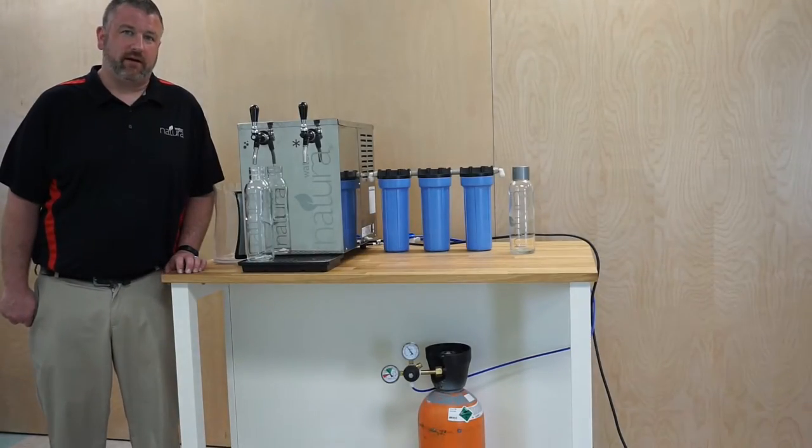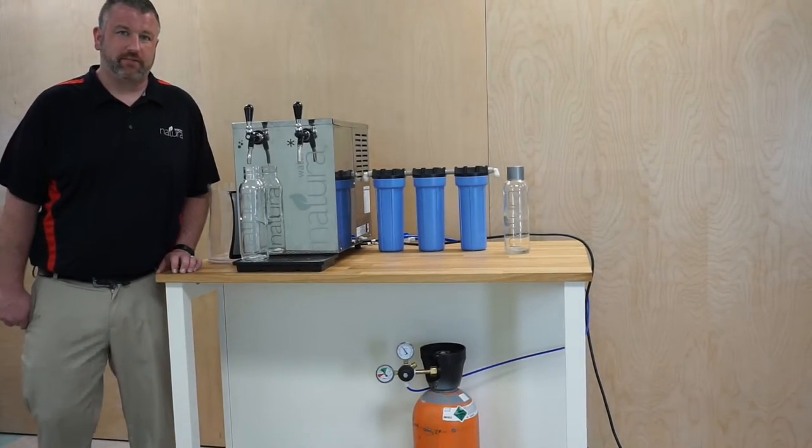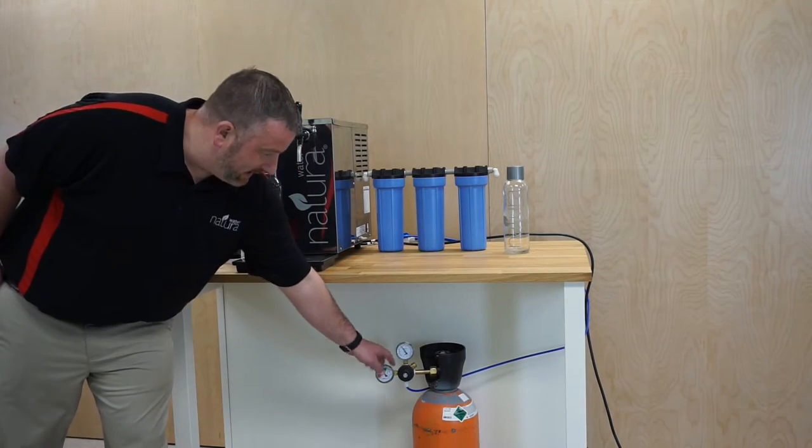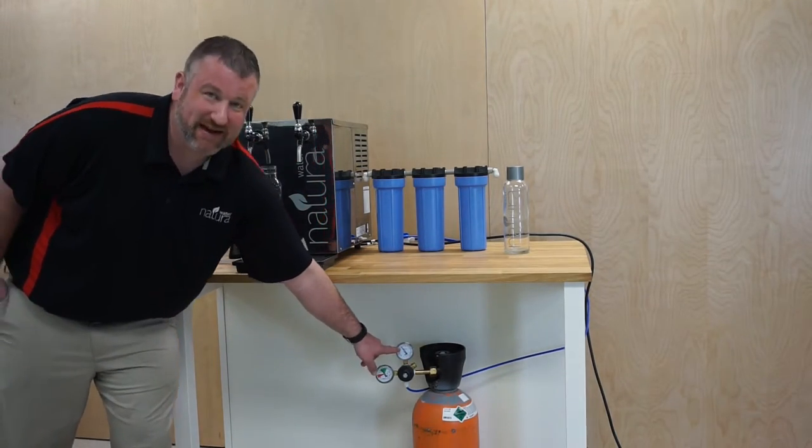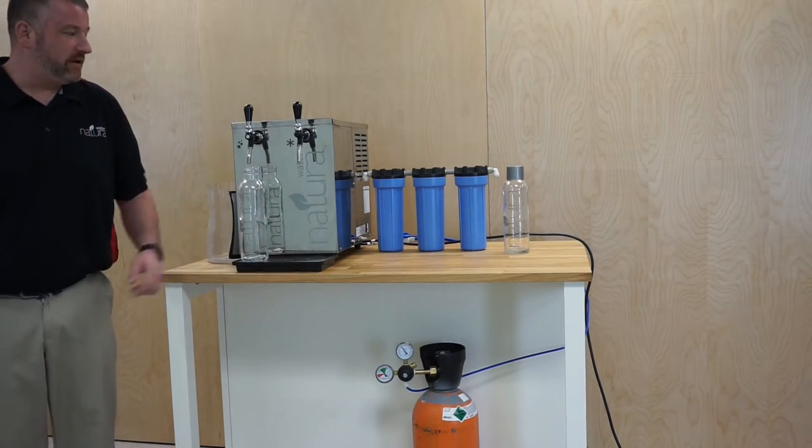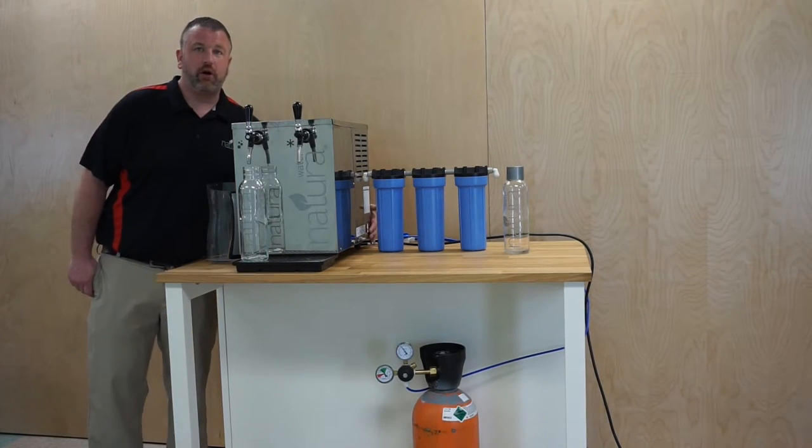With the lid back on the machine, we're now at the final step of the installation process. You want to go ahead and turn your CO2 on and make sure that your CO2 is still set at 60 PSI. Once the CO2 is on, you want to go ahead and turn on the machine.